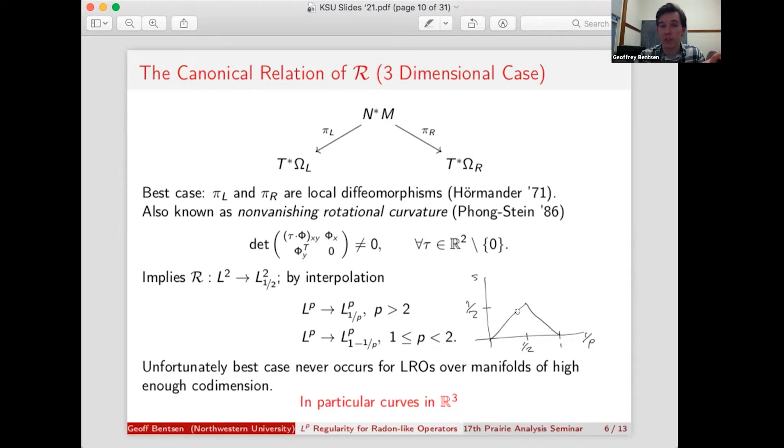But unfortunately, this best case scenario is actually impossible to achieve for local radon-like operators over curves in R3. And in fact, there's a really specific relationship that has to exist between the dimension of your manifolds and the dimension of your ambient space in order to even have examples. So we can't rely on this best case L2 result to get us up to these optimal lines. So the question is, then how do we actually achieve LP regularity that attains these lines? And I do want to point out that this 1 minus 1 over P derivative gain for small values of P is exactly what I quoted in my corollary for the restricted x-ray transform.